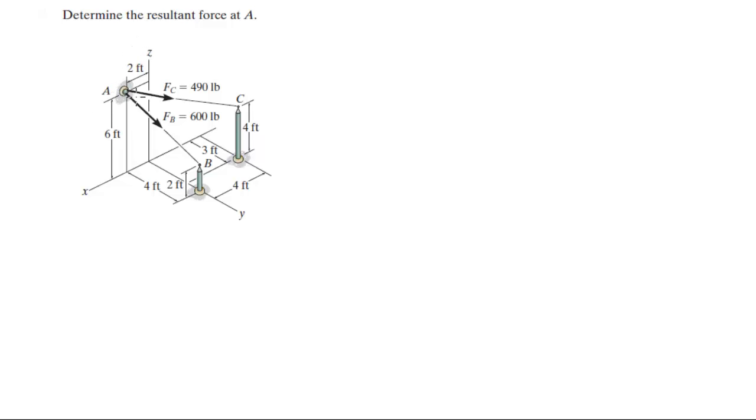So basically you have two forces FB and FC that act along AB and AC and we're going to form the Cartesian vector form of those forces and add them together.